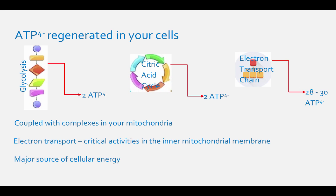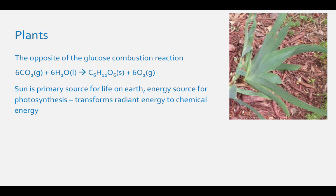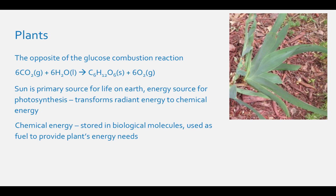Another example of coupled reactions is what happens in plants when they do the opposite of the glucose-combustion reaction. They form glucose and oxygen from carbon dioxide and water. The primary source of energy for life on the earth is the sun, which is the energy source for photosynthesis, the biological process that transforms radiant energy into chemical energy.